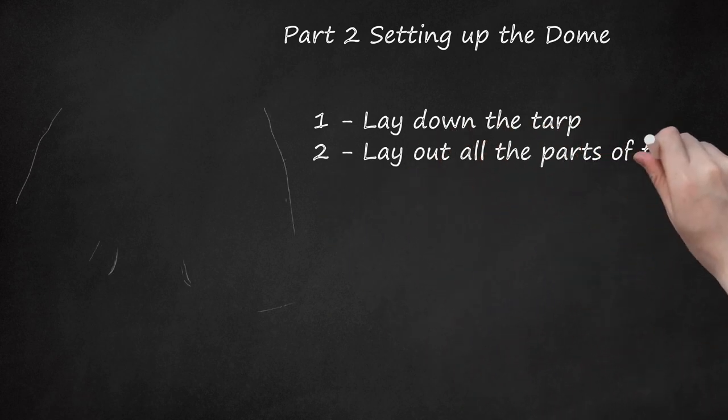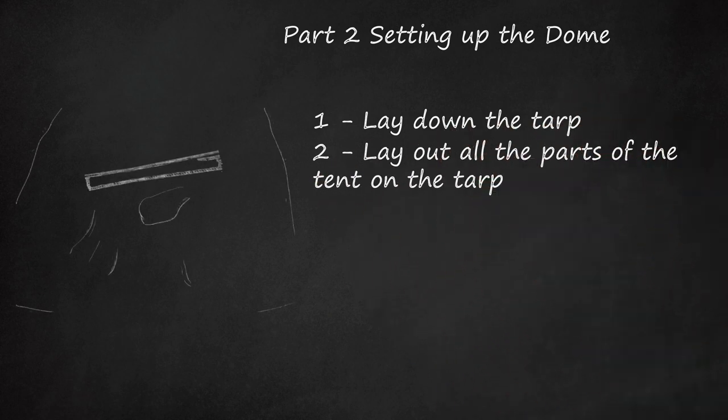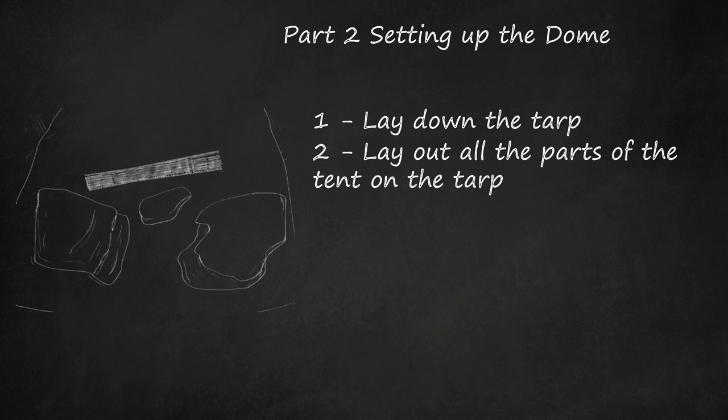2. Lay Out All the Parts of the Tent on the Tarp. Remove all the components of the tent and inspect them to make sure everything is included and in good working conditions. You won't be able to set up a tent with some broken or missing tent poles, so it's good to take a minute to make sure everything is there.